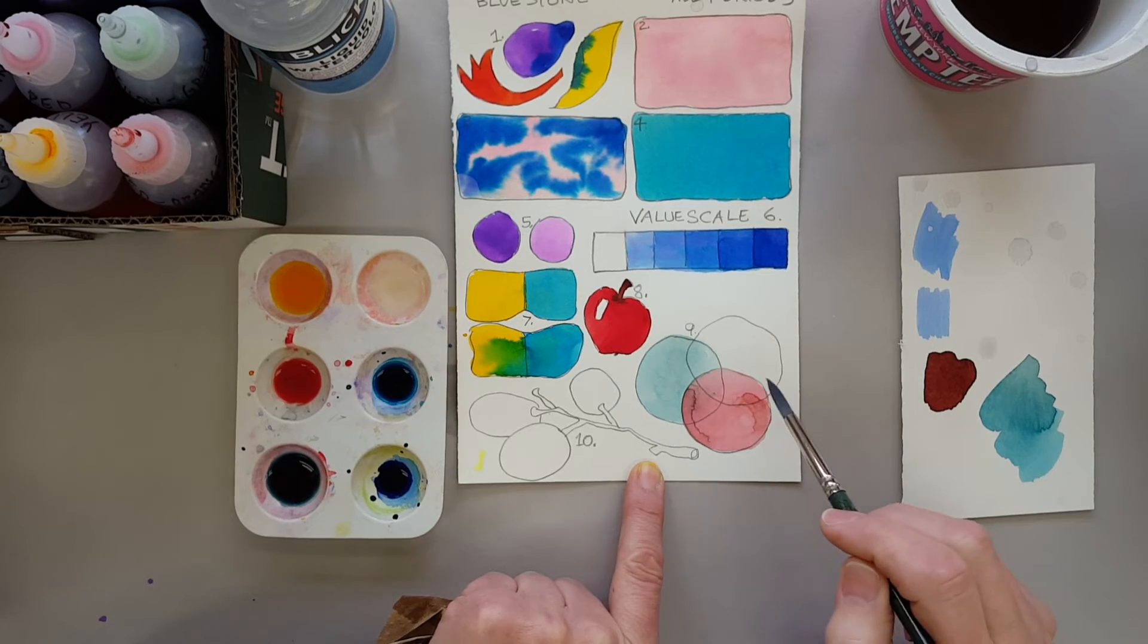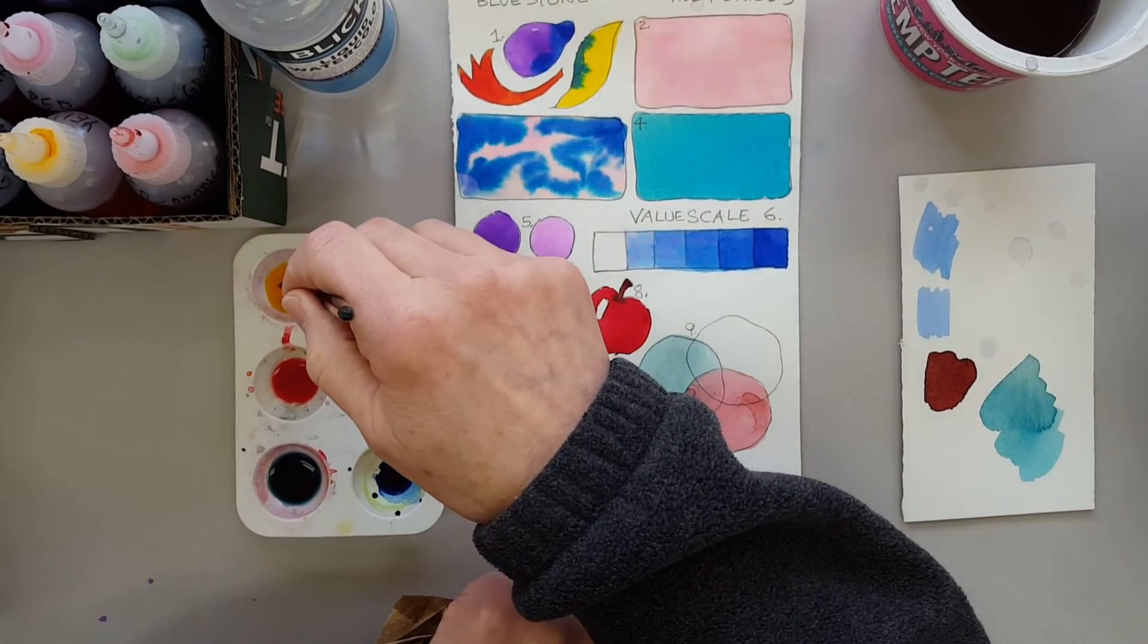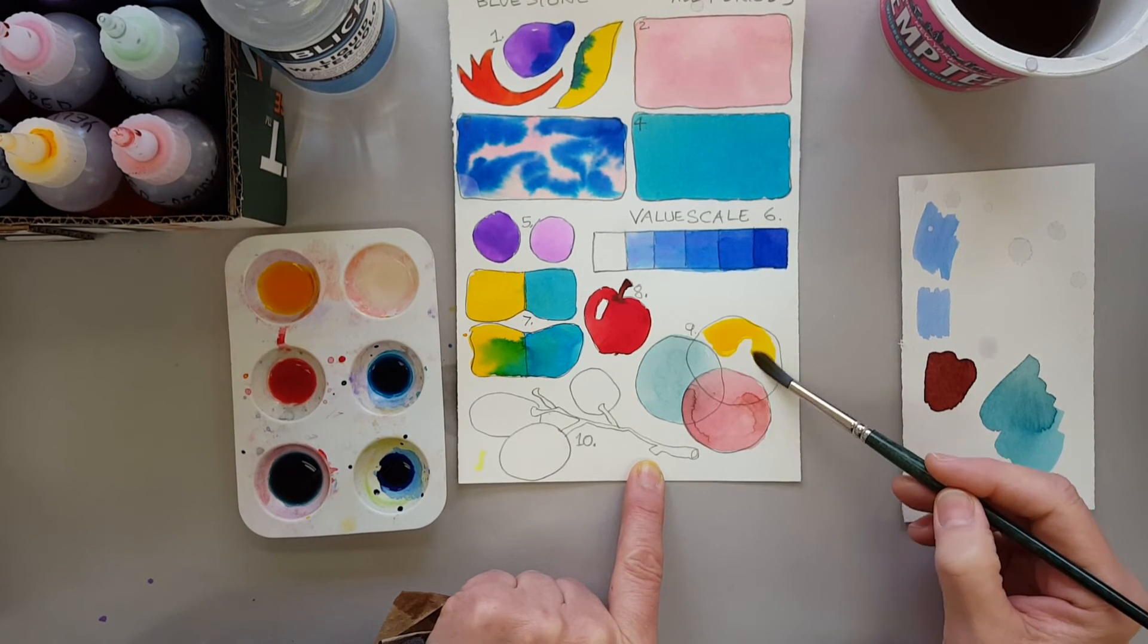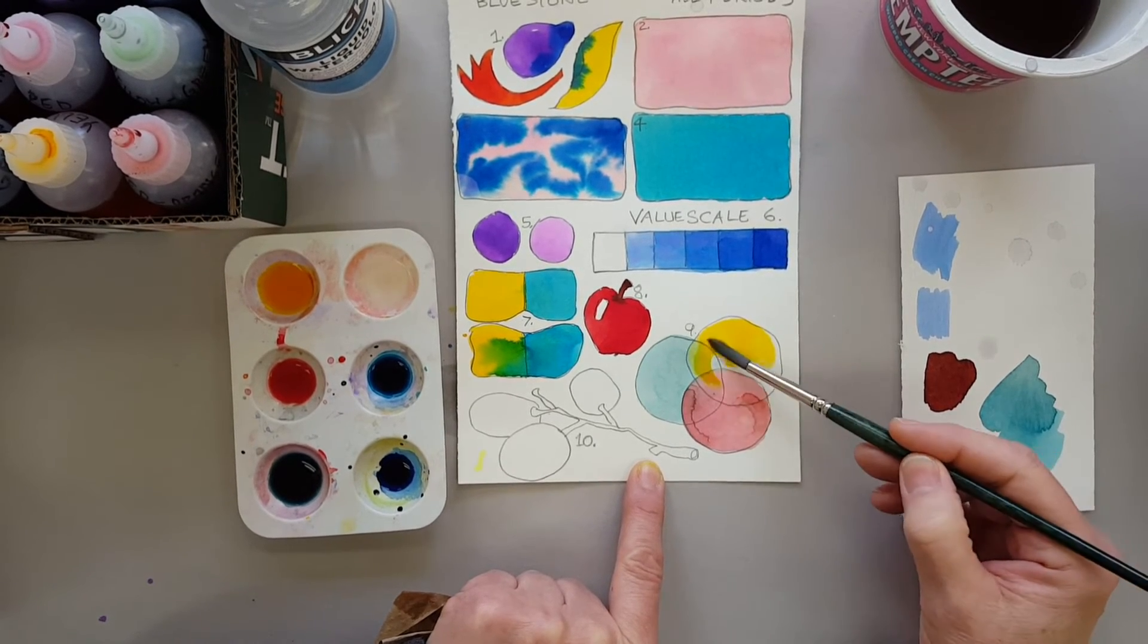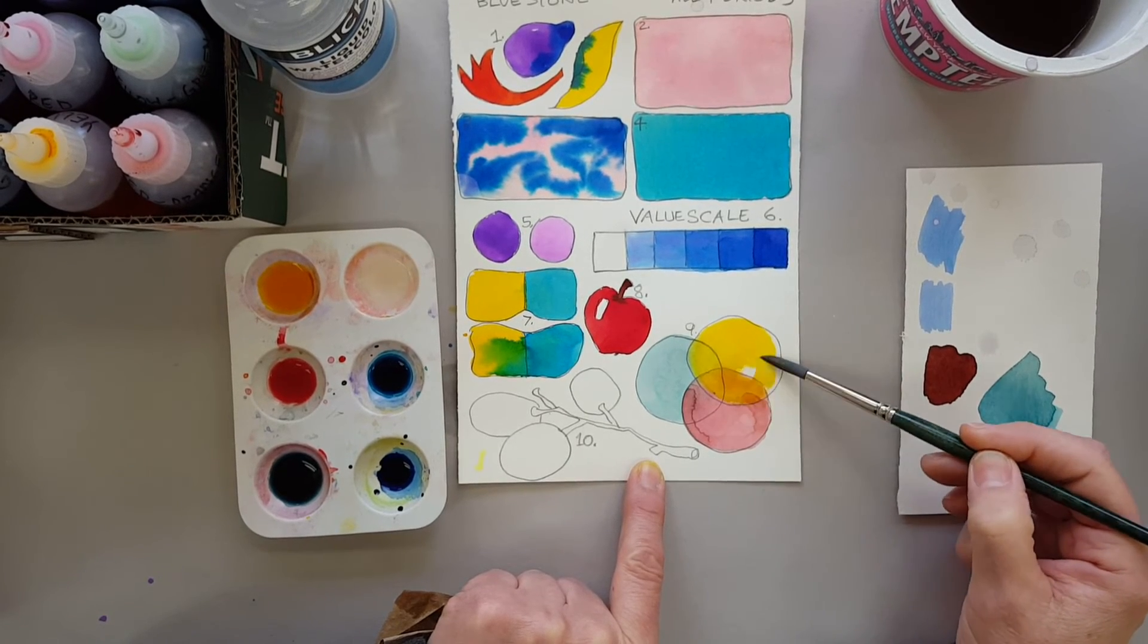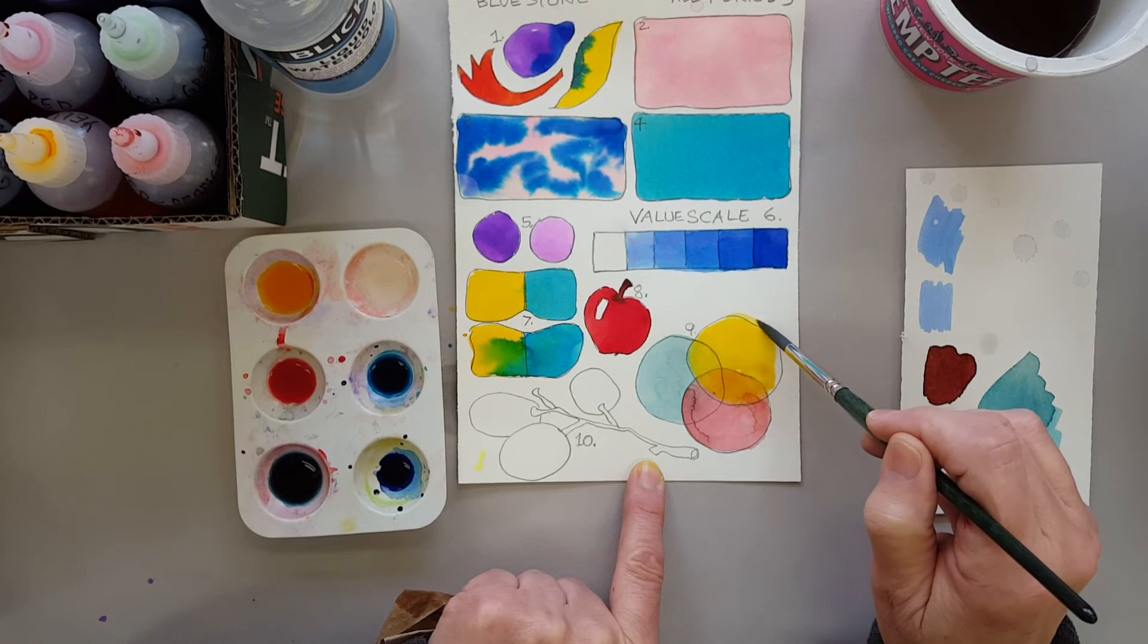But let's just see what happens when I add the last color, the yellow, right over this. And you can see over the blue it's making like a greenish color.